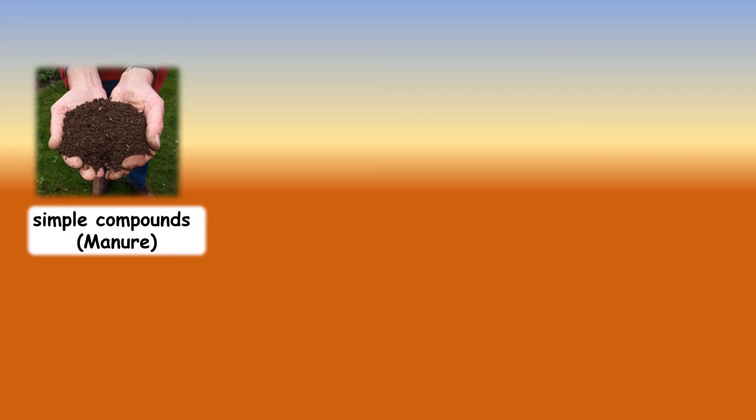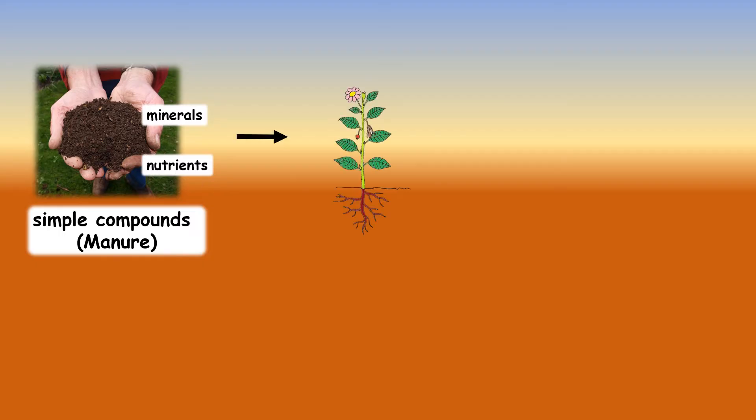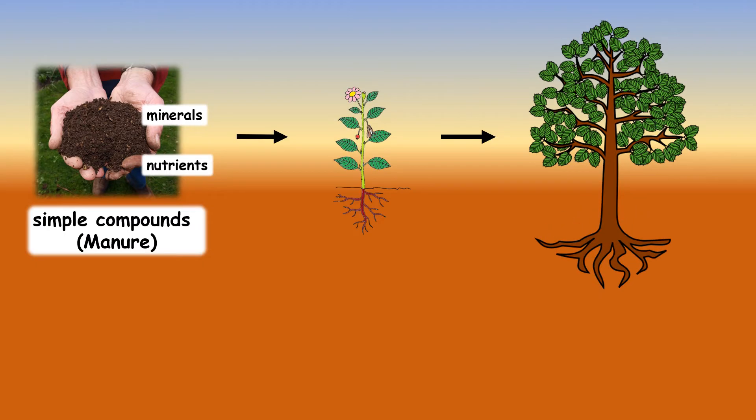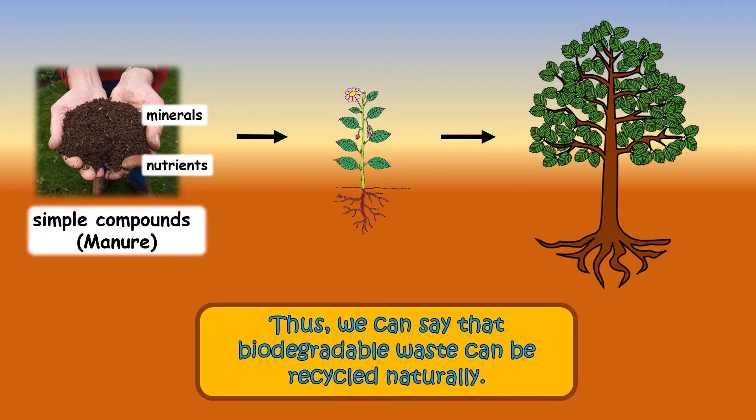The simple compounds, also called manure, released into the soil are rich in minerals and nutrients. These are used by plants for their growth and development. Thus, we can say that biodegradable waste can be recycled naturally.